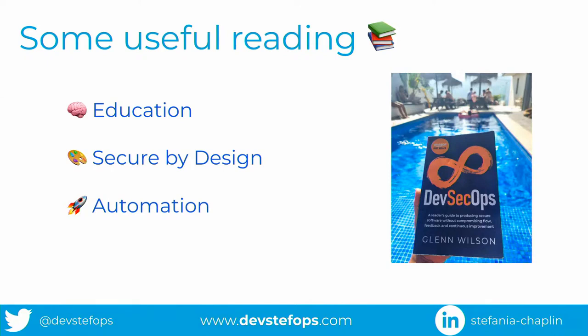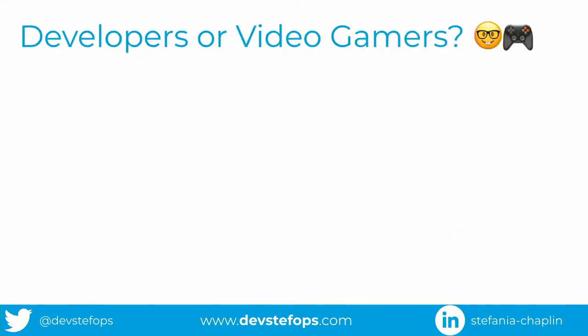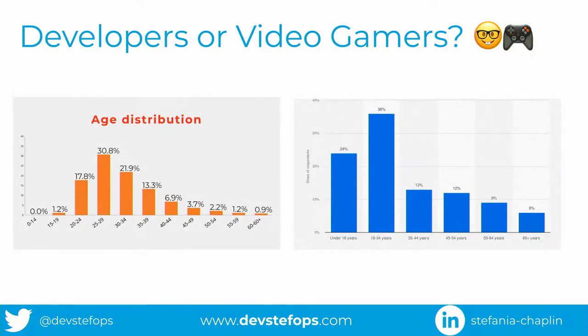Forrester said a few years ago: manual processes are doomed to fail. If you don't automate, manual processes rely on humans, and we do make mistakes. I was talking to someone from a large German bank and they showed me two graphs — the age distribution, one for developers and one for video gamers — and as you can see, they're actually really similar.